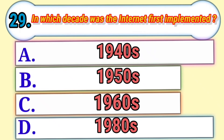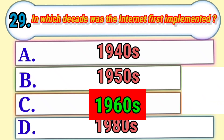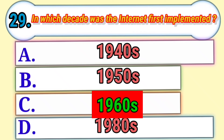In which decade was the internet first implemented? Answer: 1960.